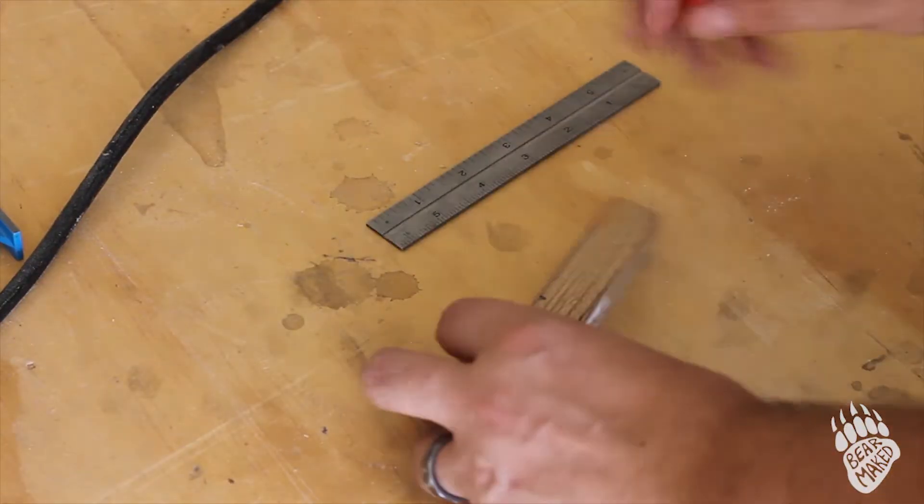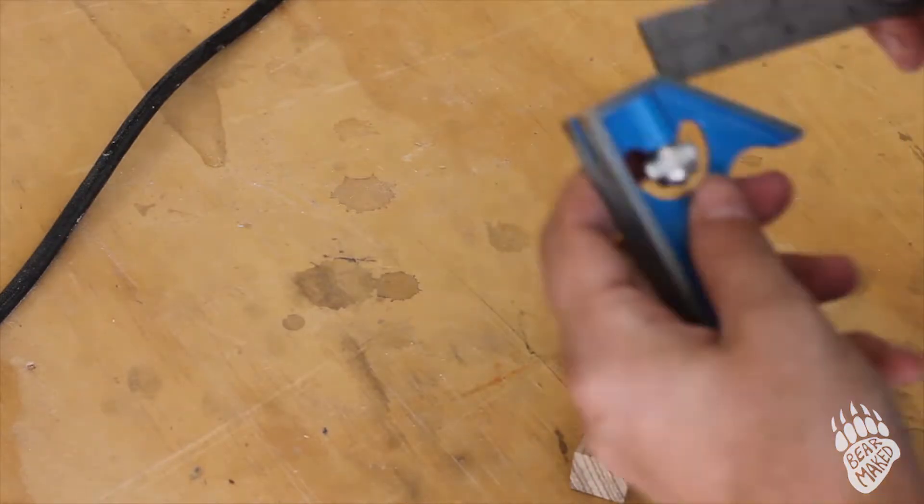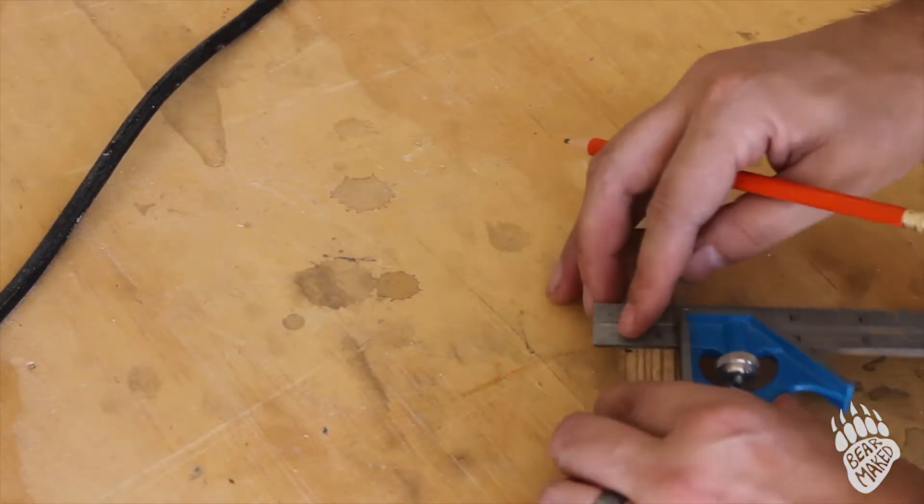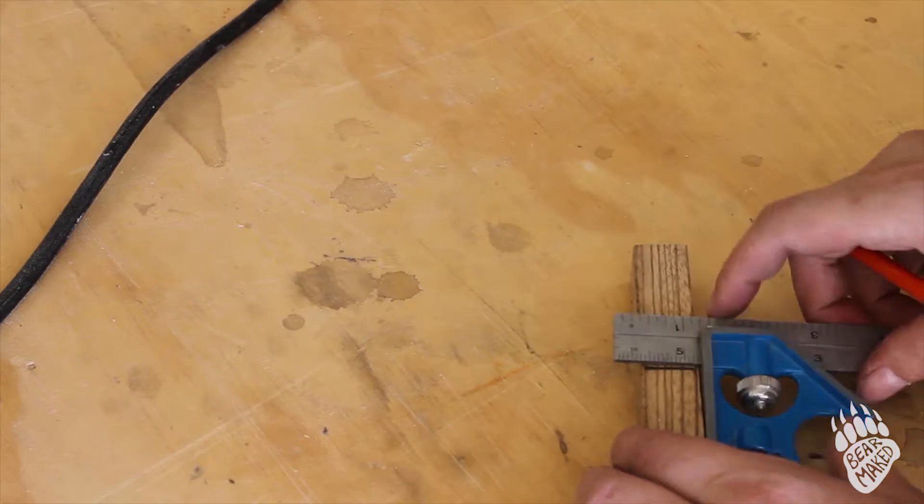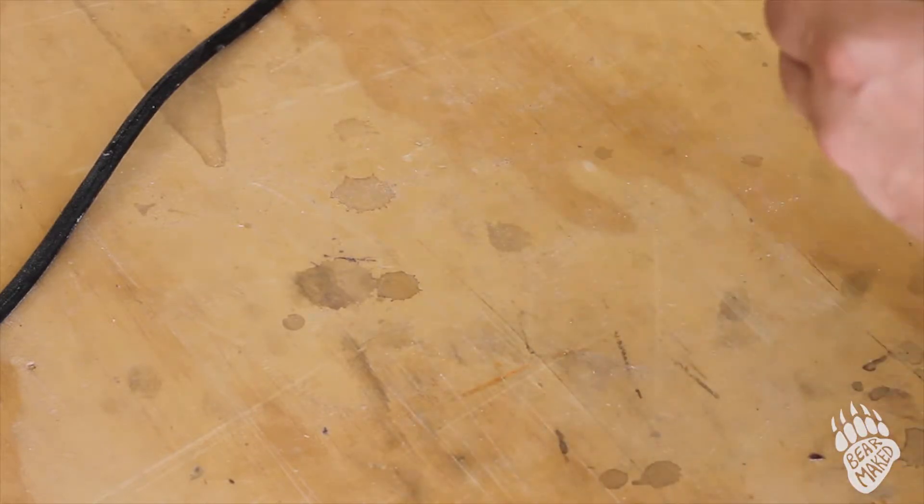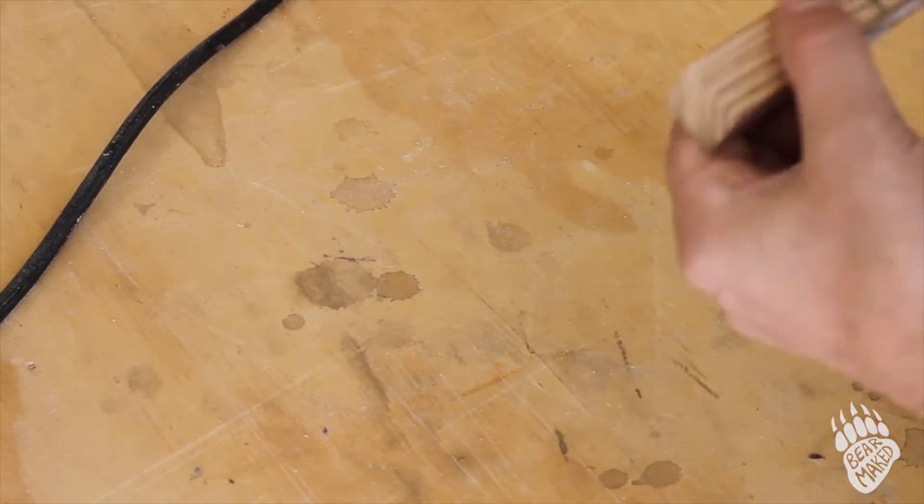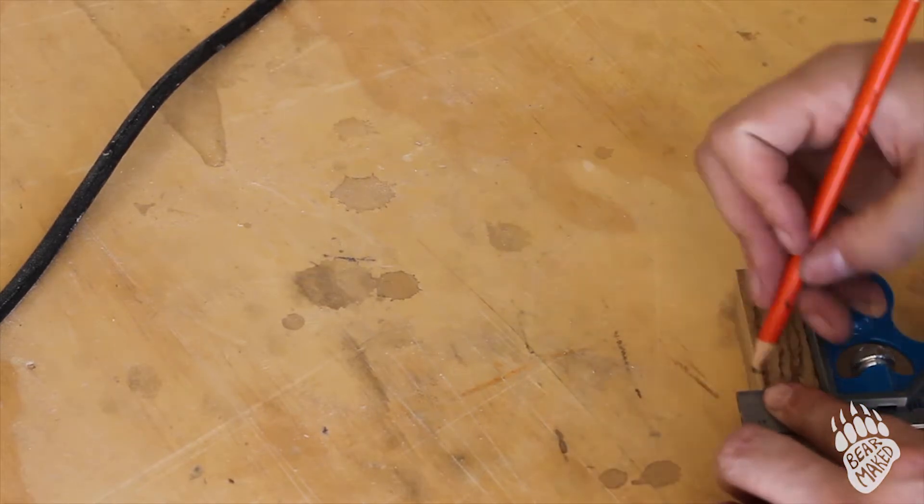So as you probably noticed, the wood I'm working with now is much different than the pen I was just using. This is zebra wood, and I'm just getting the size that I need for the two halves of the pin marked out on the blank.